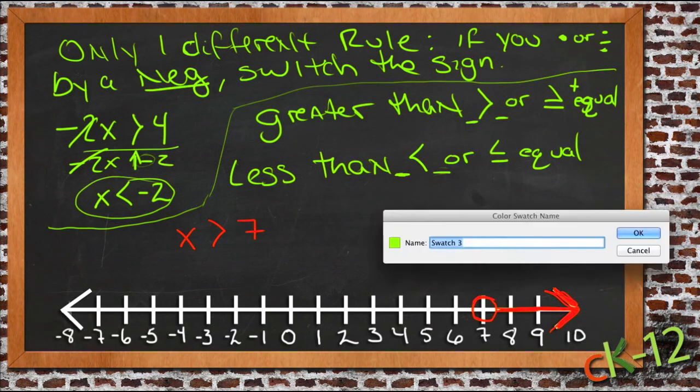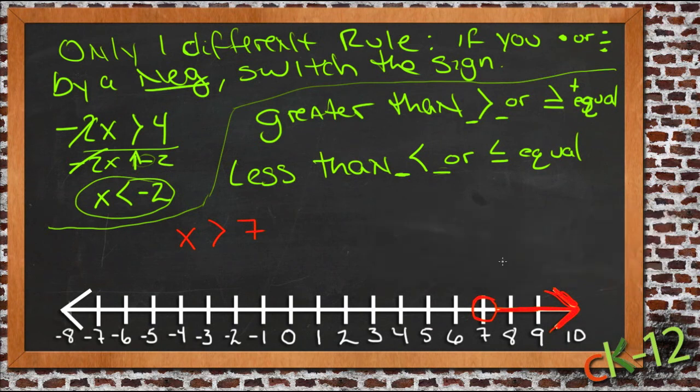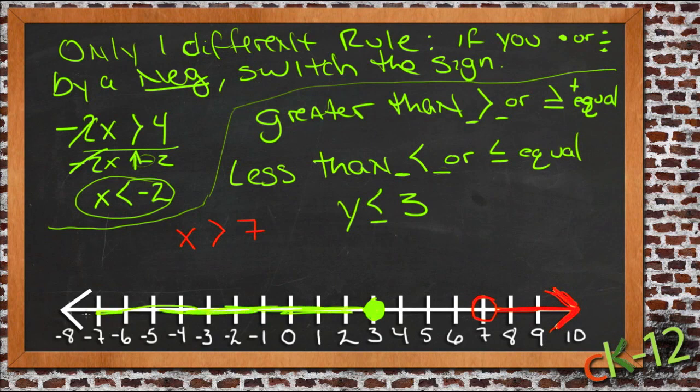If you had, for instance, y is less than or equal to 3, then we find 3 on the number line. In this case, it can also be 3, so we actually fill in that circle. And then since y is that point or anything less, we shade in what y can be off to the left.